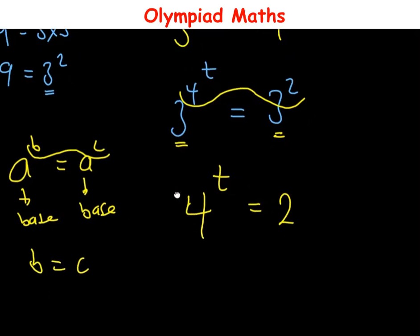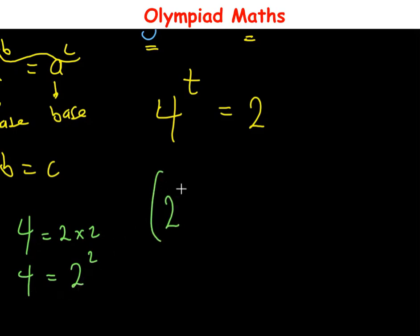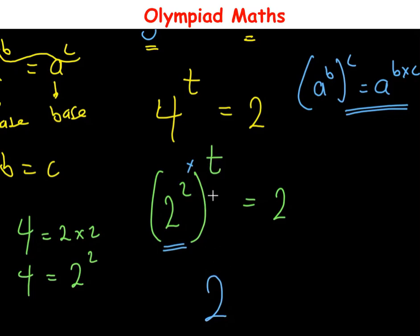Now 4 can be written as 2 times 2, which equals 2 raised to power 2. So 4 is equal to 2 squared. In place of 4, we bring in 2 squared, so in brackets we have 2 squared, then raised to power t, is equal to 2. Applying the principle of indices that a raised to power b, raised to power c equals a raised to power b times c, we get 2 raised to power 2t is equal to 2.